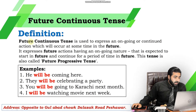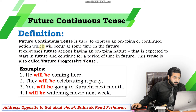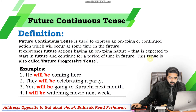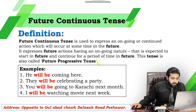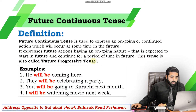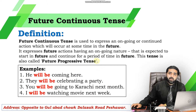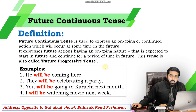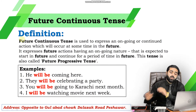First of all, here we have the definition. Future Continuous Tense is used to express an ongoing, continued action which will occur at some time in the future. It expresses future actions having an ongoing nature that is expected to start and continue for a period of time. This tense is also called Future Progressive Tense — you should remember this.